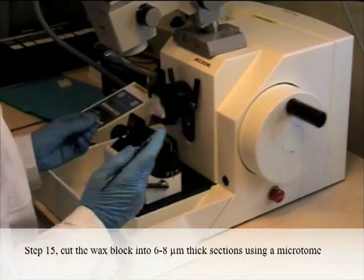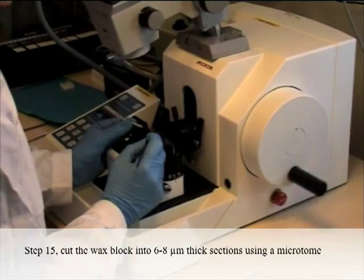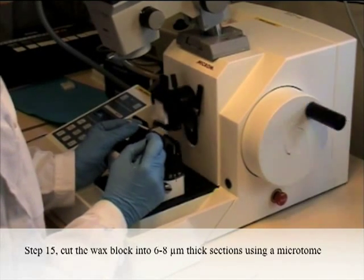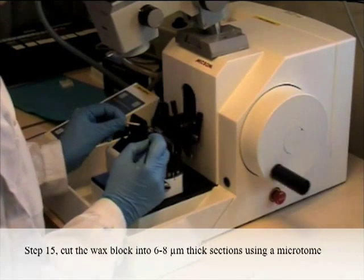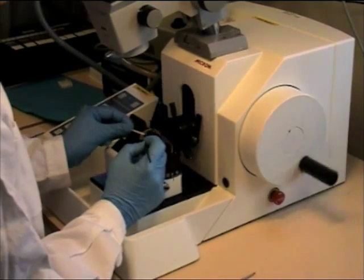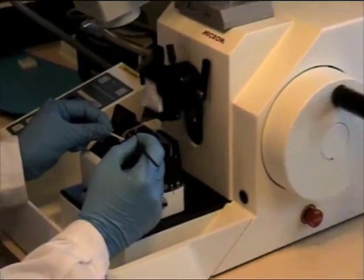Step 15: Cut the wax block into 6 to 8 micrometer thick sections using a microtome. The sections are linked in one long ribbon.